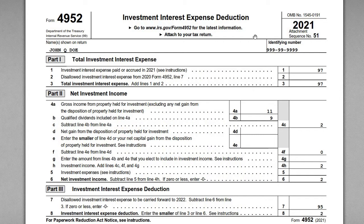High level, what's important with this form: when you have investment interest expense, you can only deduct a certain amount of expense to the extent you have investment income. Part of the task is to compute how much of your income actually qualifies as investment income, and then the investment interest expense connected with that income can be deducted to the extent that you have earnings. You cannot take an investment interest expense deduction in excess of your net investment income.